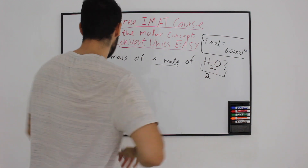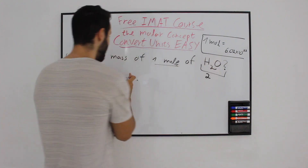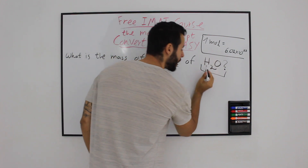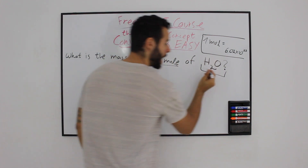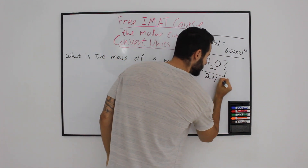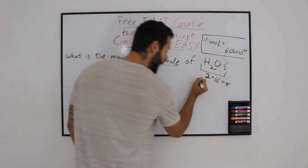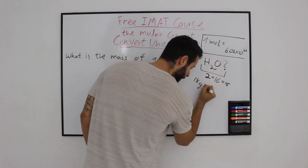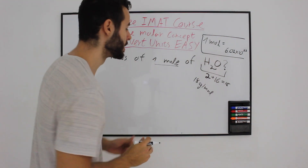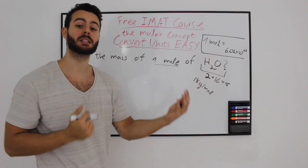So let's dive into the question. What is the mass of one mole of water? Like we said before, we have two hydrogens and one oxygen. So 2 plus 16 equals 18, and we have 18 grams per one mole of water. So if we have 18 grams in one mole of water, how do we convert it back?